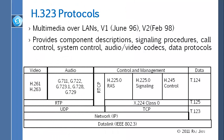Moving on to H.323. This is what we call a VoIP protocol set — it is not a single protocol but a whole set of protocols. It allows you to do voice and video over local area networks. If you read the standard it's essentially a list: for video you can use H.261 or H.263; for audio you can use various codecs; for control you should use RTCP; and there are other alternatives like H.245, H.225, and so forth.